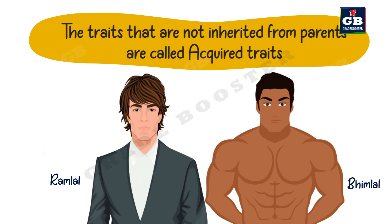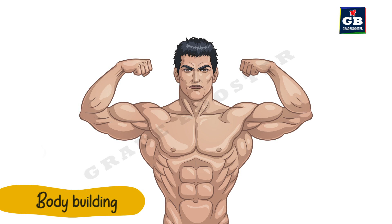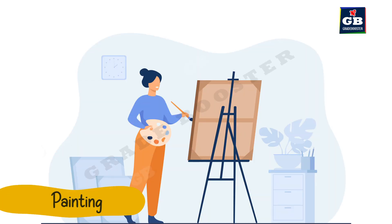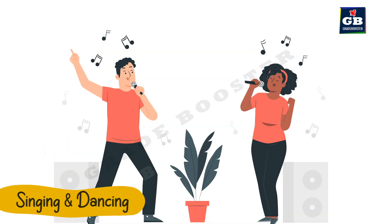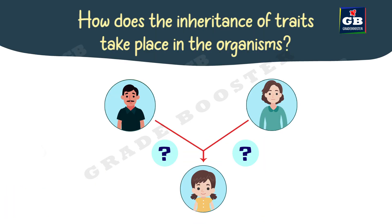Whatever traits Ramlal and Bhimlal inherited from their parents, they can pass on to the next generation. But they cannot pass their acquired traits to the next generation. Examples of acquired traits are bodybuilding — that means developing muscles — and skills like painting, singing, and dancing. Now, how does the inheritance of traits take place in organisms?